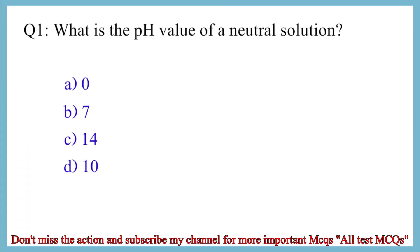Question No. 1. What is the pH value of a neutral solution? The correct answer is option B: 7.